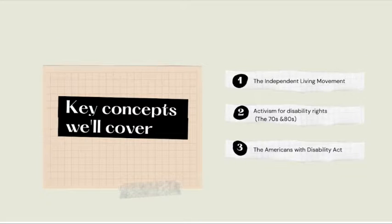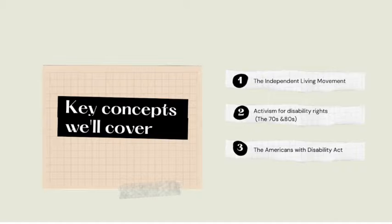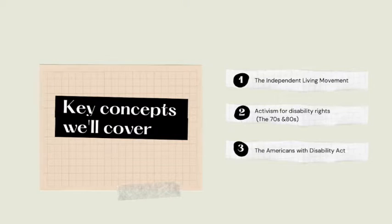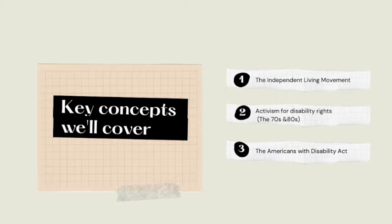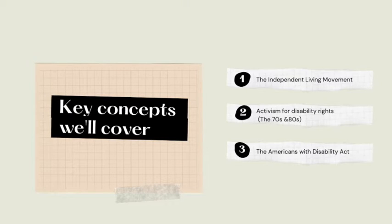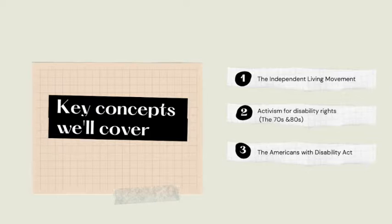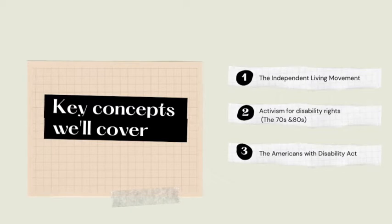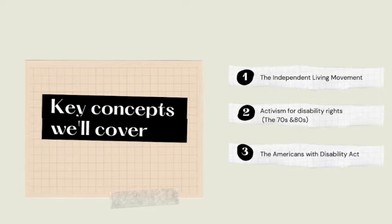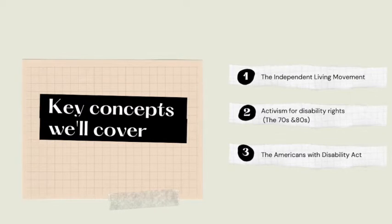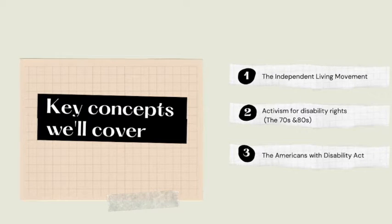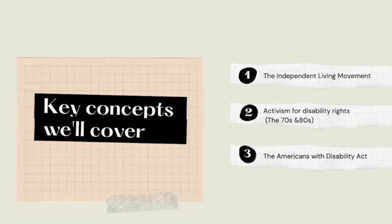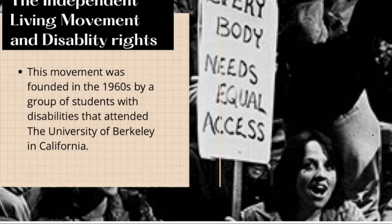Some key concepts we're going to cover today are: one, the independent living movement, which is very interesting and was actually created by college students — making us think we can do anything we set our minds to. Second is activism for disability rights, mainly focused around the 70s and 80s and how it got started. And third is the Americans with Disabilities Act, which is still intact today and is why many people are able to have accommodations in school, college, and the workforce.